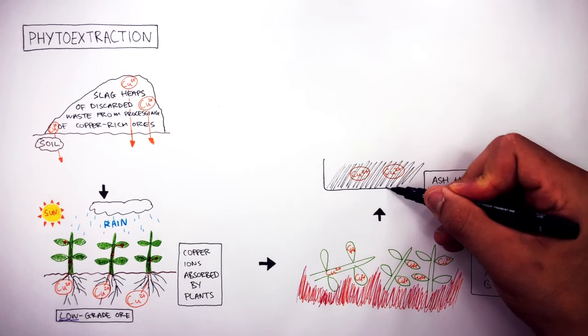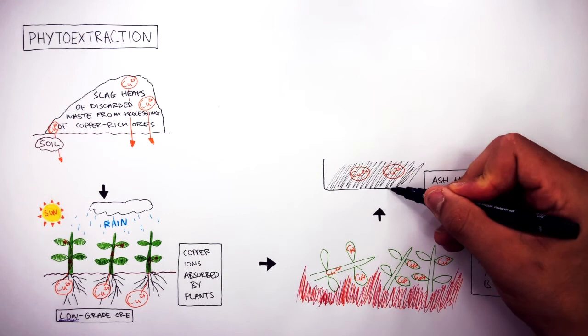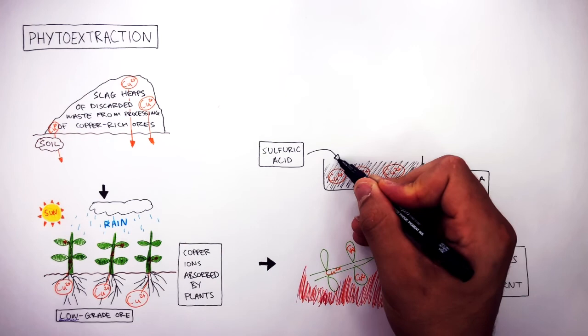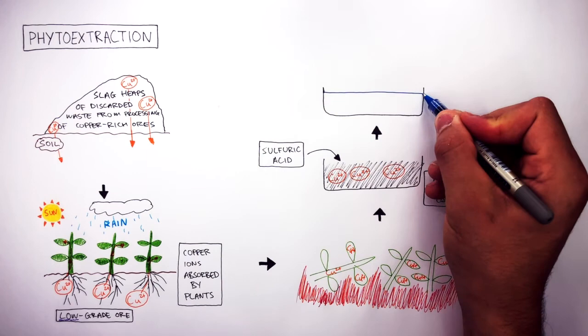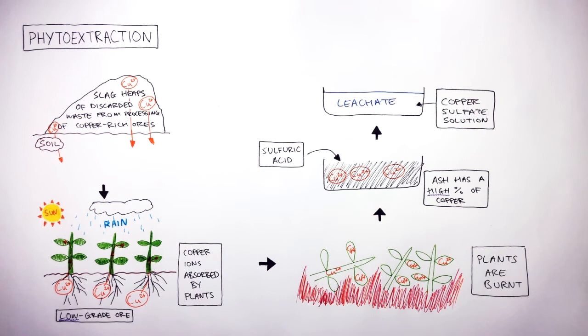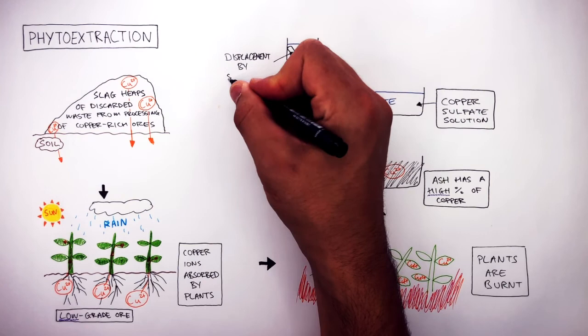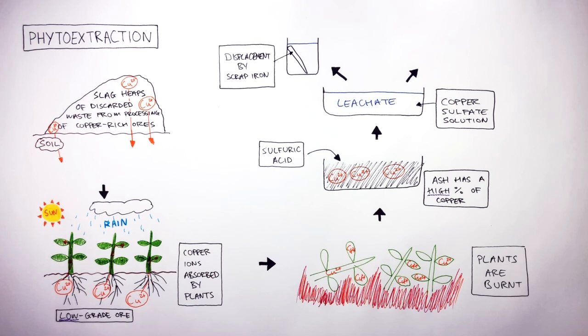In the next stage, sulfuric acid is added to the ash, which is then removed to form a solution called the leachate. The leachate is a copper sulfate solution rich in copper ions. The copper ions need to be removed from the copper sulfate solution. This can be done by adding scrap iron to the leachate—displacement by scrap iron removes the copper—or electrolysis can be used. Either method results in the formation of pure copper.